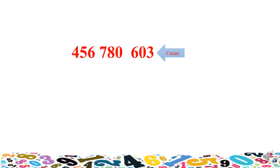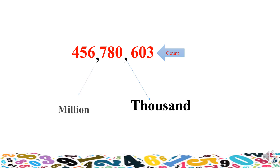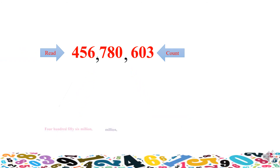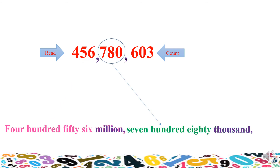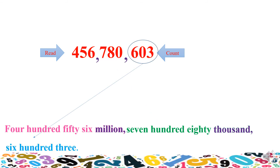Another example. To read this number, we have to count from the right side: three digits, then put the first comma, then three digits, then put the second comma. The first comma is for thousand, and the second comma is for million. Now let's try to read it from the left side: four hundred and fifty-six million, seven hundred and eighty thousand, six hundred and three.